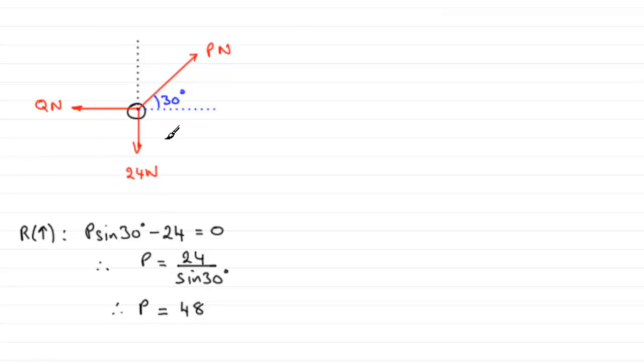Now to get Q, what I've got to do now is resolve horizontally. So if we just come down here and we resolve horizontally, it doesn't matter which way you go because it's in equilibrium. I'm going to go towards the left. It just means that in my equation, Q will be a positive value because all of Q acts in that direction. So we'll start off with that one - Q.